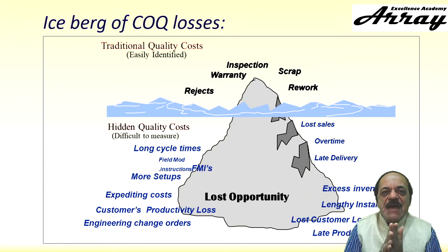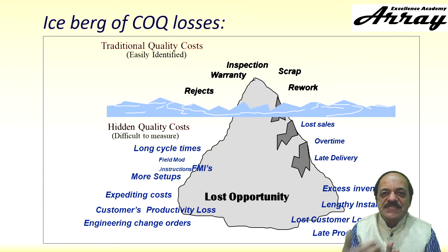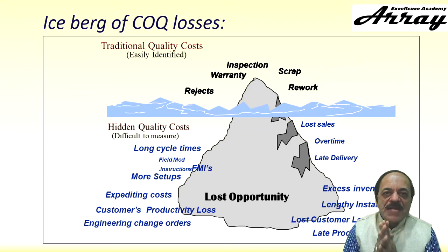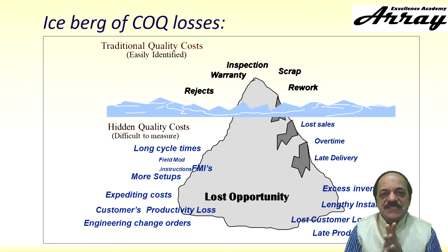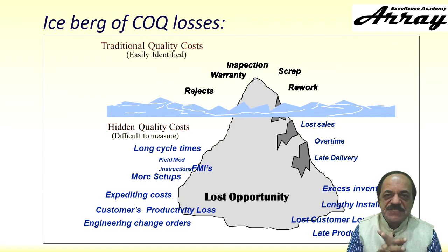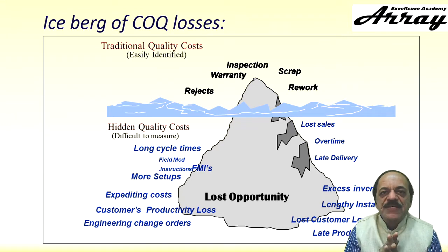Expediting cost especially happens when production is peaking — in January, February, March — when materials are found to be missing, requiring people to be sent to subcontractors to collect items urgently. All this is wasted money; proactive planning is a better idea. Customer's productivity loss is another hidden cost: if our machine frequently fails at the customer's place, stopping their production, they will get frustrated after two or three rounds and may even charge that money back to you.